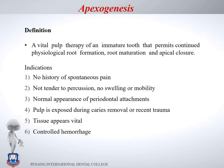The first procedure is apexogenesis. By definition, apexogenesis is a vital pulp therapy of an immature tooth — one with an open apex — that permits continued physiological root formation, root maturation, and apical closure. Root formation means the length increases, root maturation means the thickness increases, and ultimately apex closure takes place. The radicular pulp must be vital.